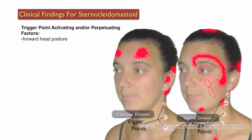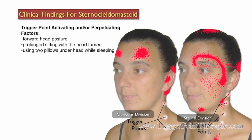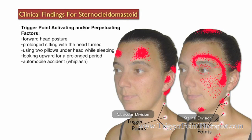Some factors that may activate or perpetuate trigger points in the sternocleidomastoid muscle include forward head posture, prolonged sitting with the head turned, using two pillows under the head while sleeping, looking up for a long period of time, automobile accidents such as whiplash injuries, scoliosis, and lower limb length inequality or limping.